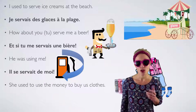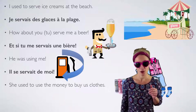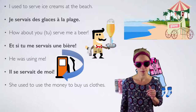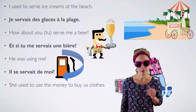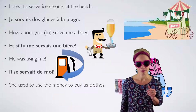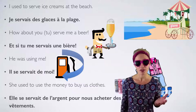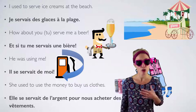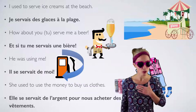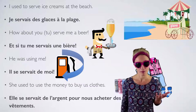'She used to use the money to buy us clothes' — Elle se servait de l'argent pour nous acheter des vêtements.